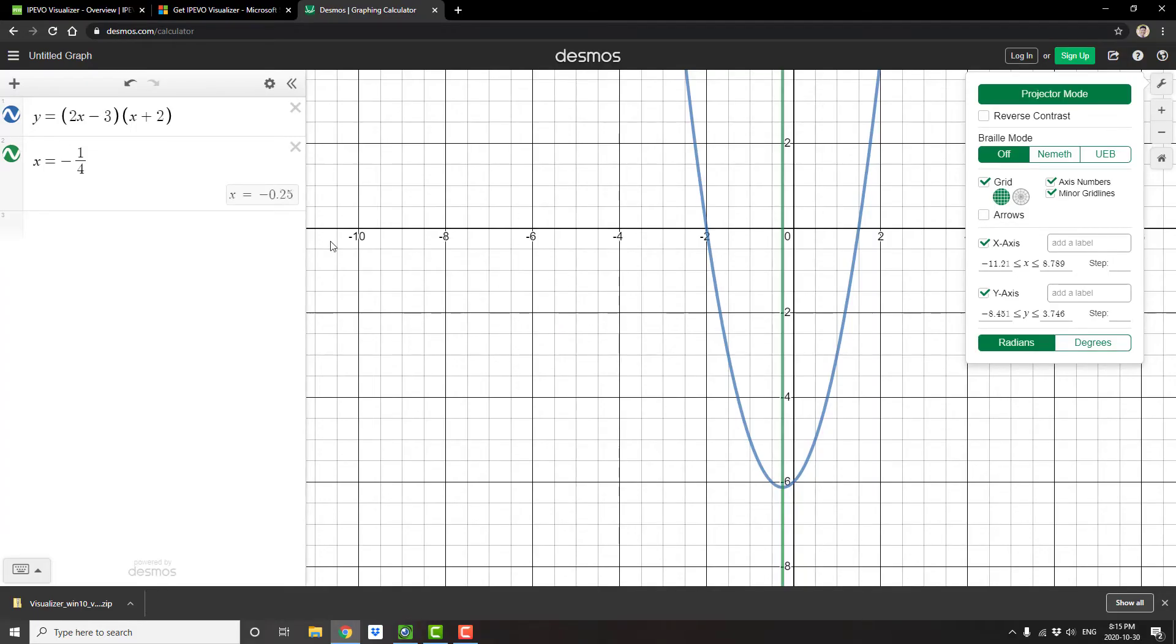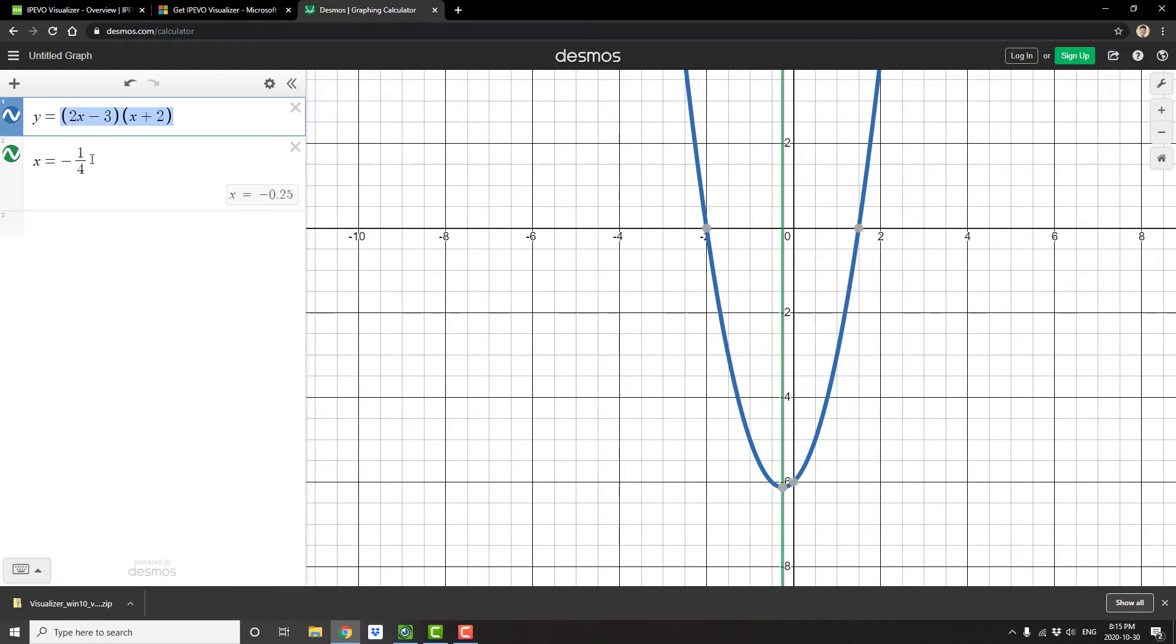And here I went to Desmos, I punched in our quadratic, and I punched in x equals negative 1 fourth, which results in a vertical line, and clearly it is the correct vertex. This here is the equation of the line of symmetry.